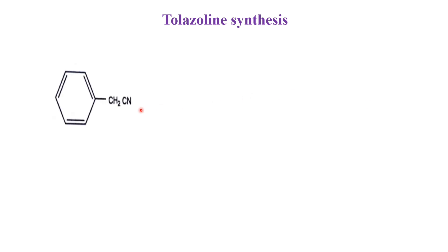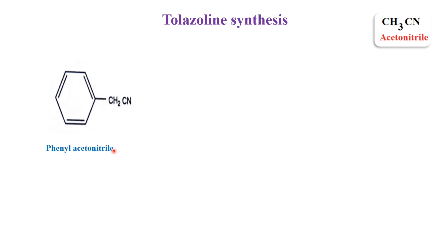Now we will see the synthesis of tolazoline. For this synthesis, we have taken the starting material as phenylacetonitrile. Acetonitrile is CH₃CN, also called methyl cyanide. Here, one hydrogen is replaced by a phenyl group, so it is called phenylacetonitrile. This part is called the benzyl group, and the benzyl group is attached with a cyanide — that is why it is otherwise called benzyl cyanide.